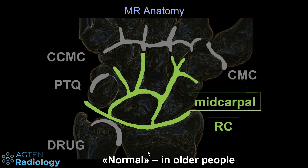Also considered to be normal is a communication between the radiocarpal joint and the midcarpal compartment. Especially during arthrography, if you inject the midcarpal compartment you can have contrast communication through small defects either through the SL or LT space — especially the thin membranous portion of these two ligaments can have holes and facilitate communication between these two compartments.